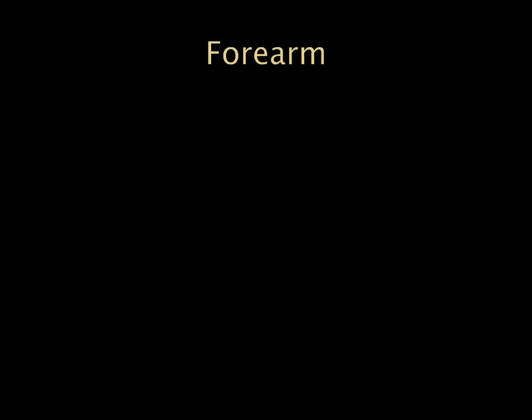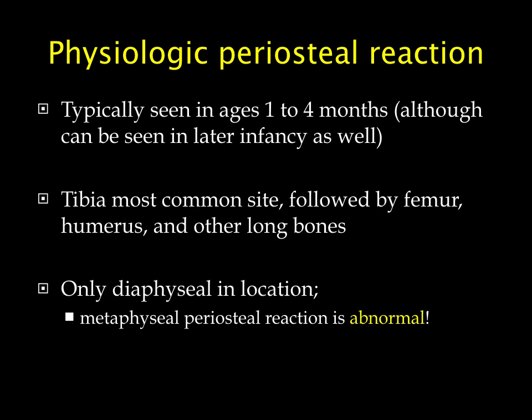Moving into the forearm, we'll talk about some normal variants. In pediatrics we have physiologic periosteal reaction, particularly in infants below six months. It can appear in multiple long bones — tibias, femur, humeri — but here we'll see examples from the forearm. These should only be along the shaft; if the periosteal reaction is centered around the metaphysis, that's abnormal.